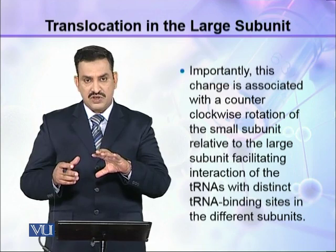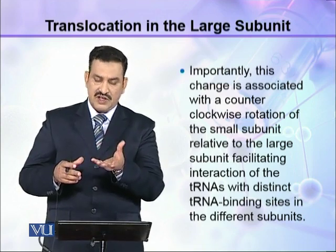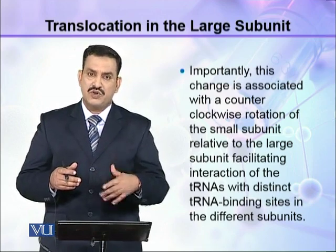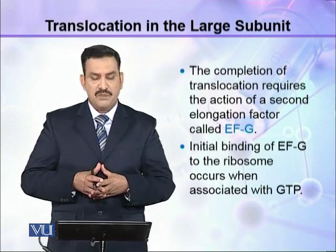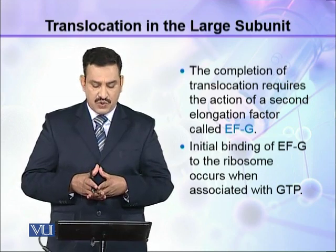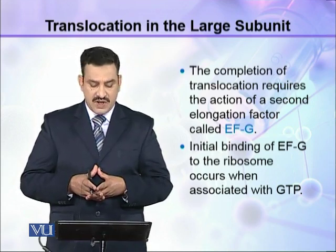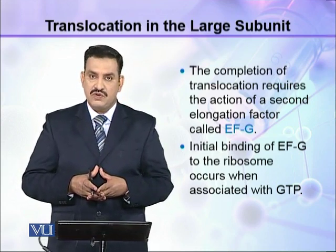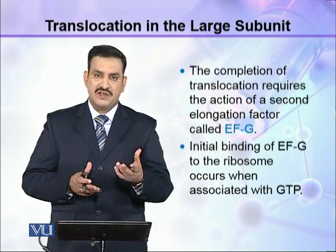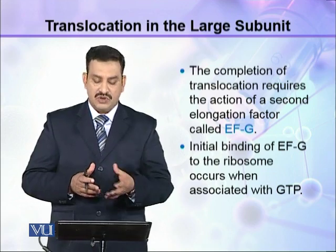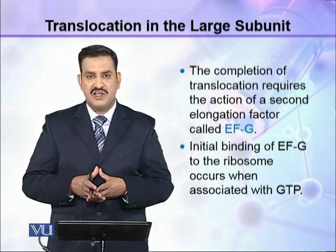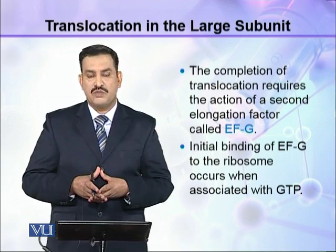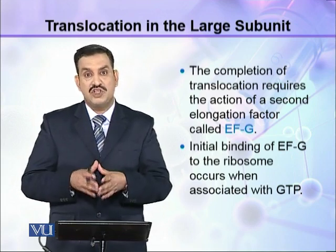The completion of translocation requires the action of a second elongation factor called EFG. The first elongation factor is EF-Tu; EFG is the second. The initial binding of EFG to the ribosome occurs when it is associated with GTP.